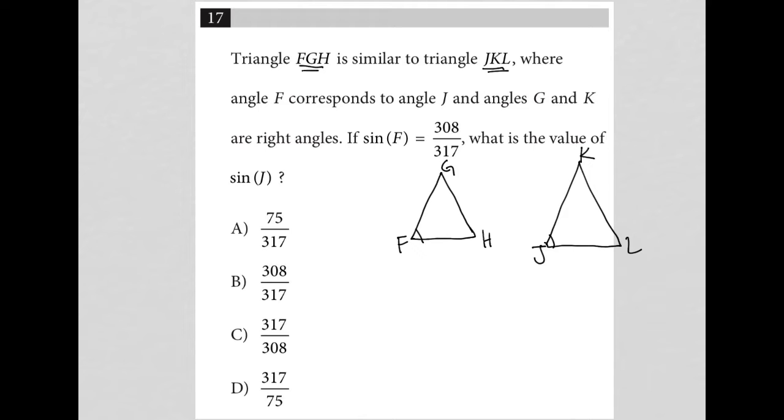So angle F corresponds to angle J and angles G and K are right angles. Okay so gotta change up my thing here. I'm gonna draw it this way. I'm gonna make this G, make this F and make this H.